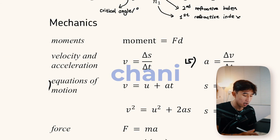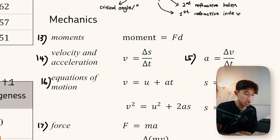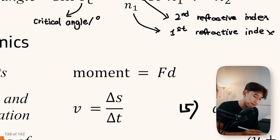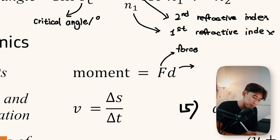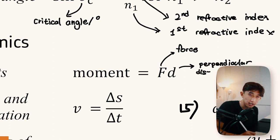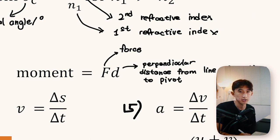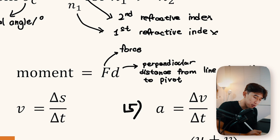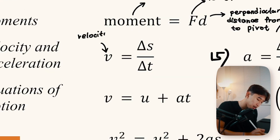Now mechanics. The moment of a force is defined as force (in newtons) multiplied by the perpendicular distance from the line of action to the pivot (in metres), giving units of newton-metres. Velocity (m/s) is defined as the rate of change of displacement, where s is displacement in metres and t is time in seconds. On a displacement–time graph, the gradient gives instantaneous velocity.